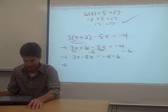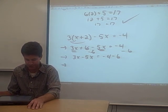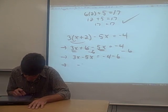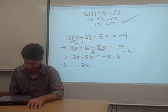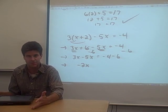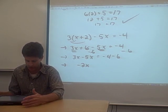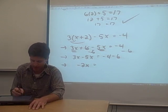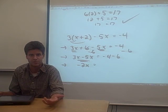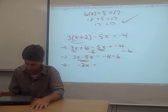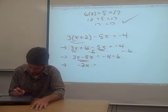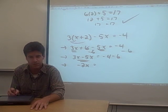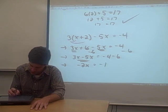Now what we can do is combine those two terms that have the x's in them. 3x minus 5x is minus 2x. Basically you just take the 3 minus the 5, which is the negative 2, and leave the x on them. We'll talk more about these polynomials in a future video, so you can check that out in a minute. Negative 2x is what we get on the left-hand side of the equation. On the right-hand side of the equation, negative 4 minus 6 is negative 10.